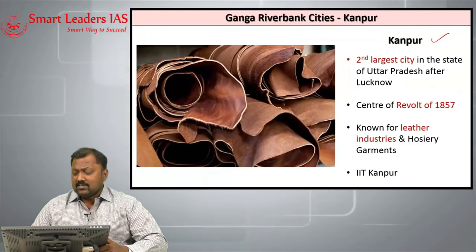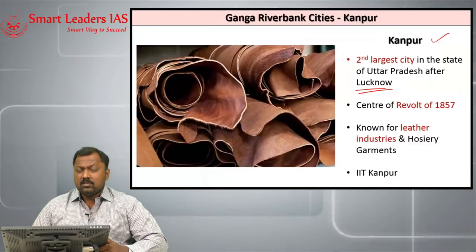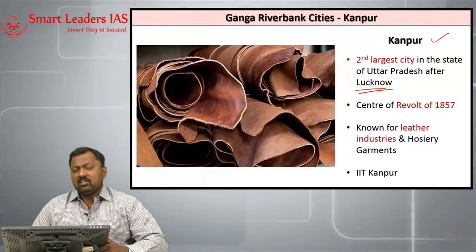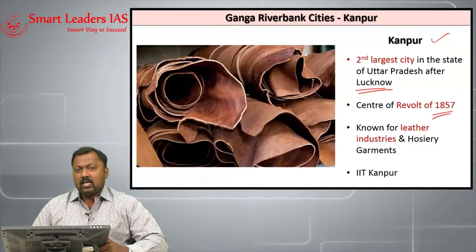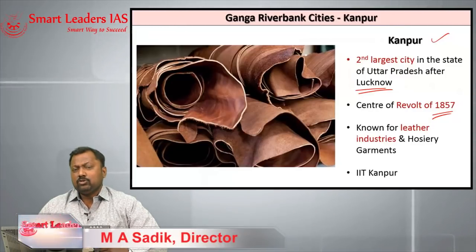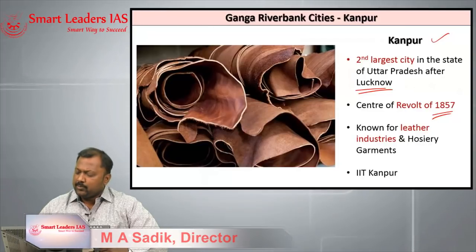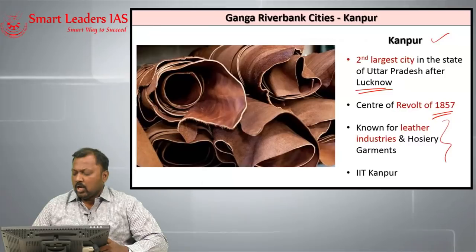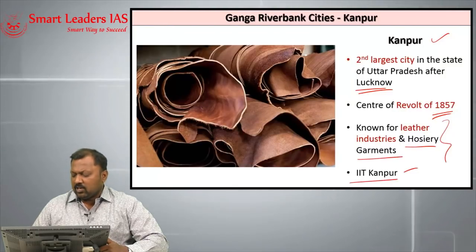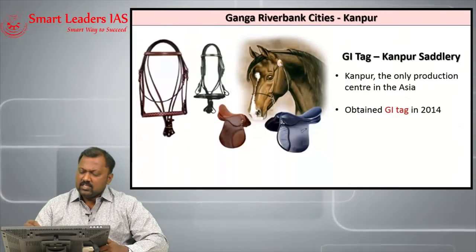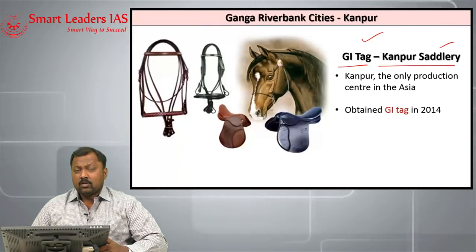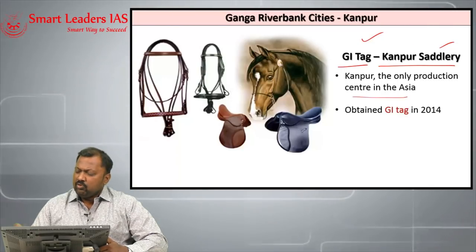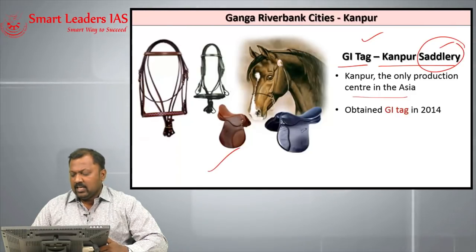Moving to Kanpur — it is the second largest city in the state of Uttar Pradesh after Lucknow. The revolt of 1857 was very important here, with Nana Saheb being a revolutionary who fought during the revolt from Kanpur. Kanpur is also known for leather industries and hosiery garments, and houses IIT Kanpur. Kanpur saddlery is a GI tag allotted to Kanpur, which is the only place not just in India but in all of Asia where this saddlery is made. The Kanpur saddlery GI tag was given in 2014.